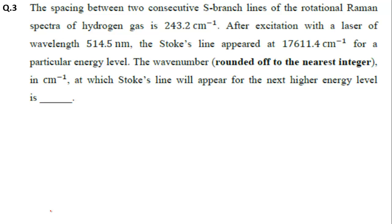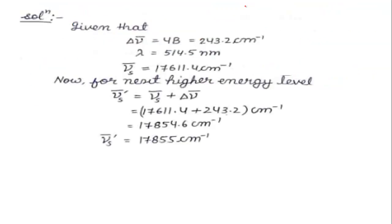Question 3: The spacing between two consecutive S-branch lines of rotational Raman spectra of hydrogen gas is 243.2 cm⁻¹. After excitation with a laser of wavelength 514.5 nm, the Stokes line appeared at 17611.4 cm⁻¹ for a particular energy level. The wavenumber at which the Stokes line will appear for the next higher energy level is to be found. The key thing to note is the S-branch.